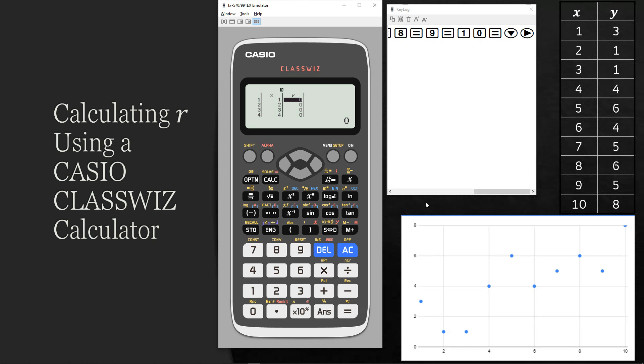Now the y values. So we've got 3, 1, 1. Good idea to always check for mistakes. 3, 1, 1, 4, 6, 4. Again, always checking for mistakes. And then 5, 6, 5. And finally 8. And we should have 10 pairs of values. And we do.